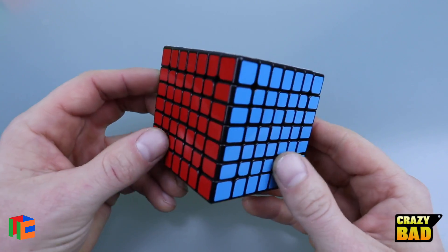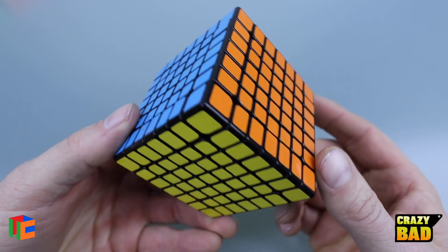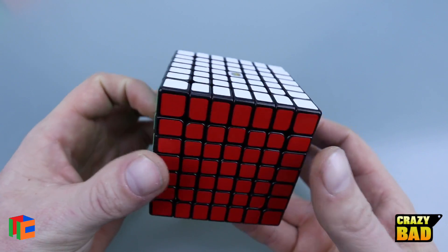Hello everybody, in today's video we're going to be taking a closer look at the new Cubicle Wuji M. So this is a new release from Cubicle Labs. This is basically a magnetized 7x7 that's been set up and everything.